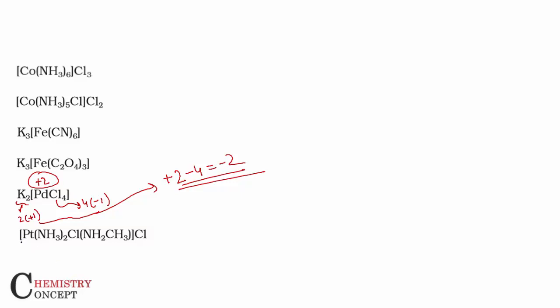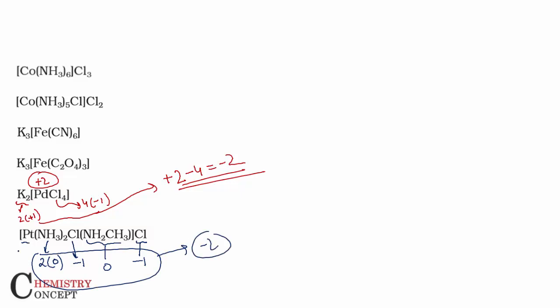For the last example in this set: we have two ammonia ligands — ammonia is zero. We have a chlorine at minus one, a methylamine ligand which is also zero, and another chlorine at minus one. The net ligand charge when added is minus two, so the metal is in the +2 oxidation state. I hope this was clear — these were the neutral complexes.